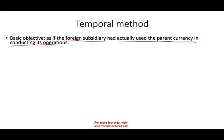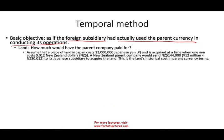Let me give you an example. A piece of land in Japan costs 12 million Japanese yen. The company acquires it at a time when one yen equals 0.1012 New Zealand dollars — it's a New Zealand branch buying Japanese land. The New Zealand parent company would send 144,000 New Zealand dollars based on that rate to the Japanese subsidiary to acquire the land. We then assume the land is recorded at the parent company for 144,000 — as if the parent company bought it. That's the overall big idea.